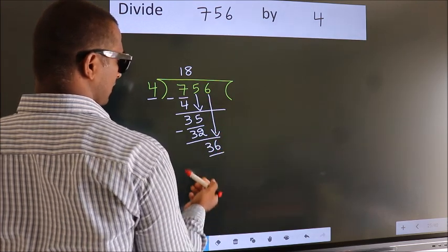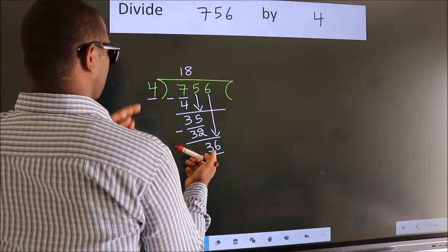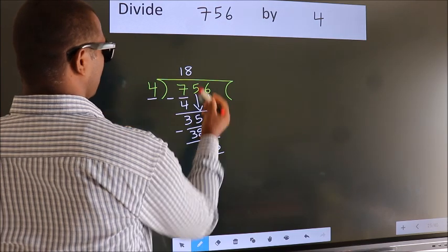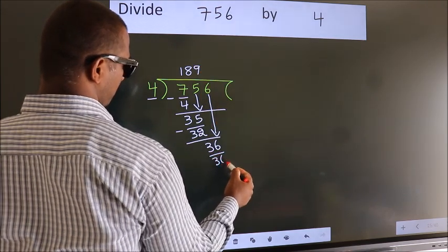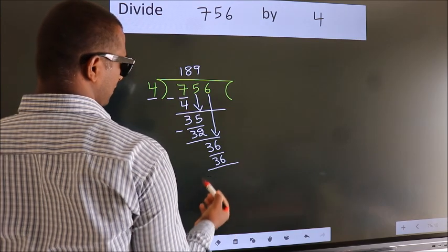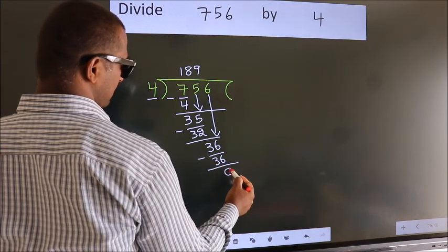So, 36. When do we get 36? In 4 table. 4 9s, 36. Now, we subtract. We get 0.